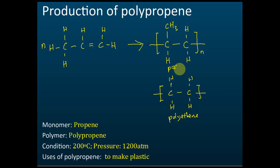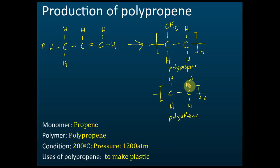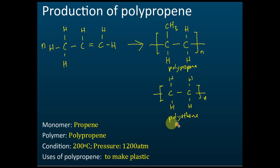Let's compare polyethene and polypropene. They look almost the same. The only difference is that in polyethene this group is hydrogen, while in polypropene it is CH3. The rest of the structure is the same. Polypropene is used to make plastic items like plastic chairs, while polyethene is used to make plastic bags.